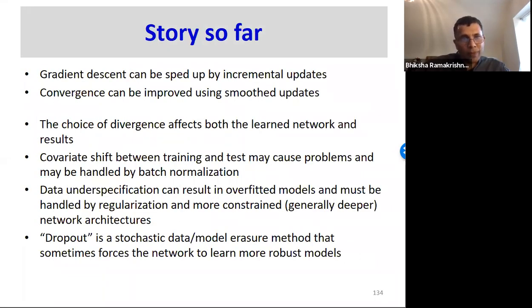So, here is the story so far. Gradient descent can be sped up by incremental updates. Convergence can be improved using smoothed updates. The choice of divergence affects both the learned network and the results. Covariate shift between training and test may cause problems and may be handled by batch normalization. Data under specification can result in overfitted models and must be handled by regularization and more constrained, generally deeper network architectures. Dropout is a stochastic data or model erasure method that sometimes forces the network to learn more robust models.